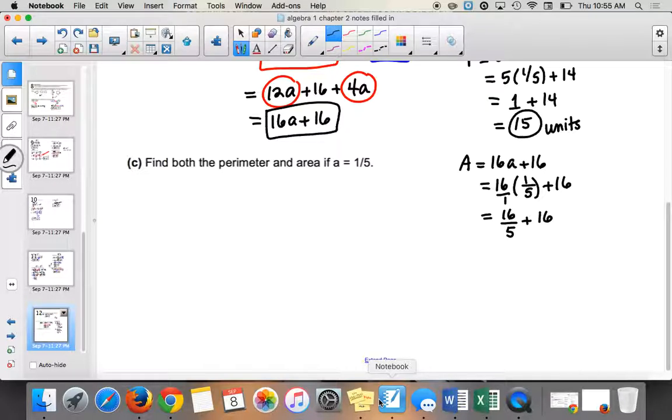And you could do this a couple different ways. You could write 16 over 5 as a mixed fraction, which some of you guys still like. You probably did a lot of that in pre-algebra, right? So if it was a mixed fraction, what would it be? Yeah, it would be 3 and 1 fifth. And then adding to 16, then you would just get a total of 19 and 1 fifth. So you can do it that way.